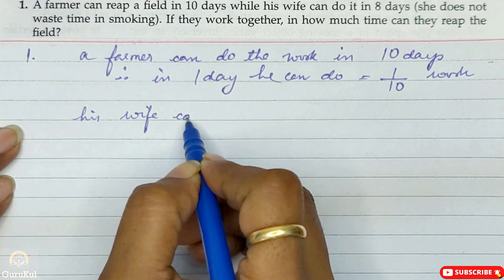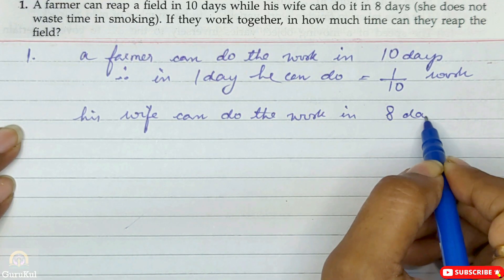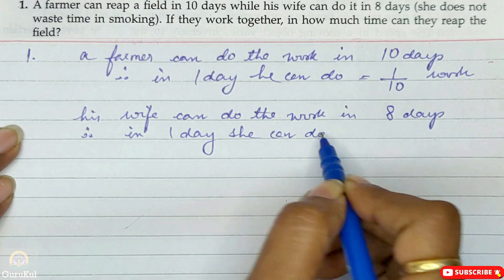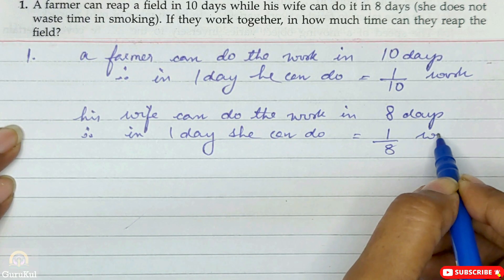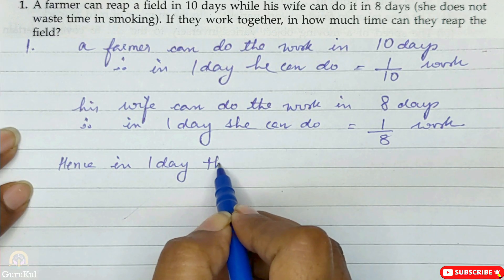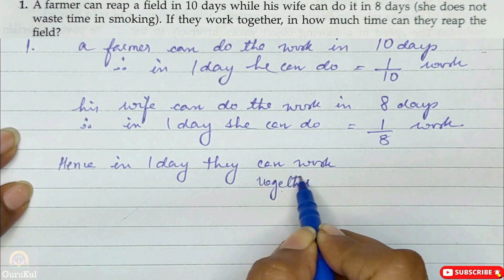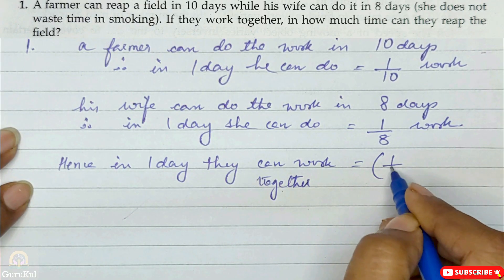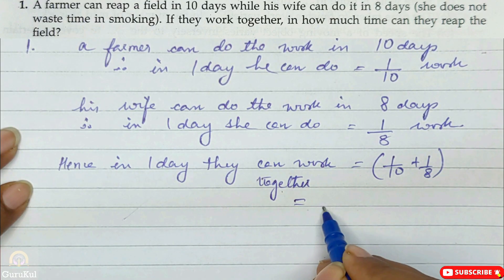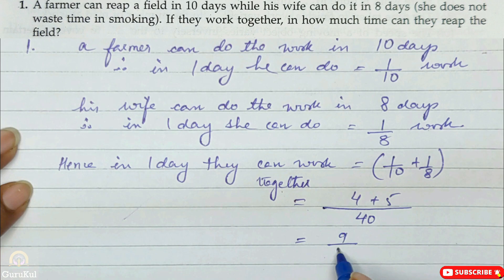Similarly, his wife can do the work in eight days. Therefore, in one day she can do one by eight work. Hence, in one day they can work together doing one by ten plus one by eight. We need to find the LCM of ten and eight, which is forty. That gives us four plus five, which is nine by forty.